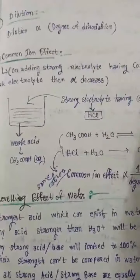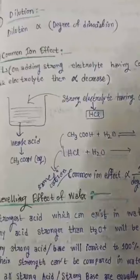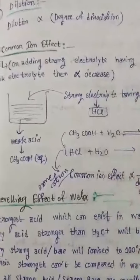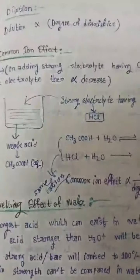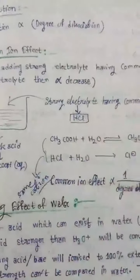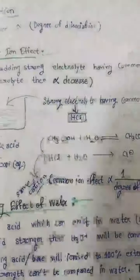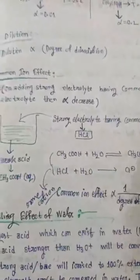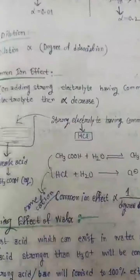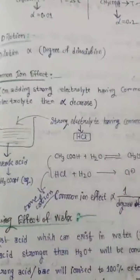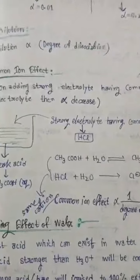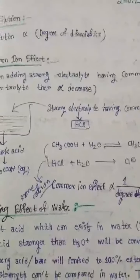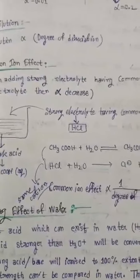Alpha কি? Basically alpha হচ্ছে যখন একটা electrolyte কে একটা solvent এ add করে dissolve করা হচ্ছে, spontaneously dissolve হচ্ছে, যতো ions dissolve হচ্ছে alpha তো increase করছে — degree of dissociation.